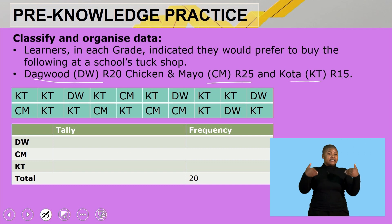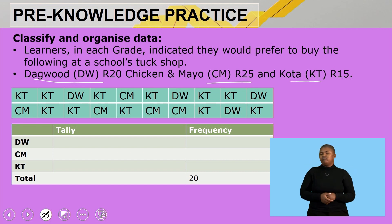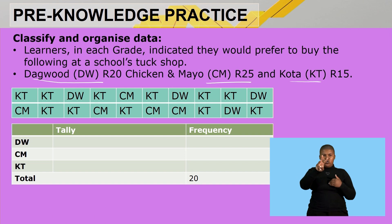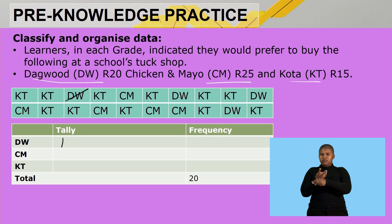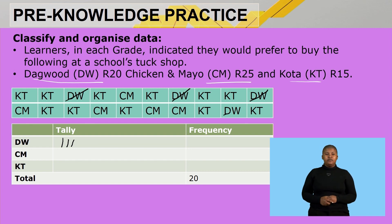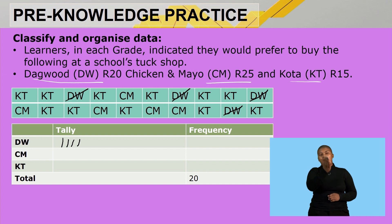Let us start with duck wood. The simplest way to minimize mistakes when working with such data is to cancel out each result as you go, since it is possible to count one result twice or not count it at all. As we move through the results, each time a duck wood appears we cancel it out and make one stroke under the tally. We end up with four learners who prefer duck wood.